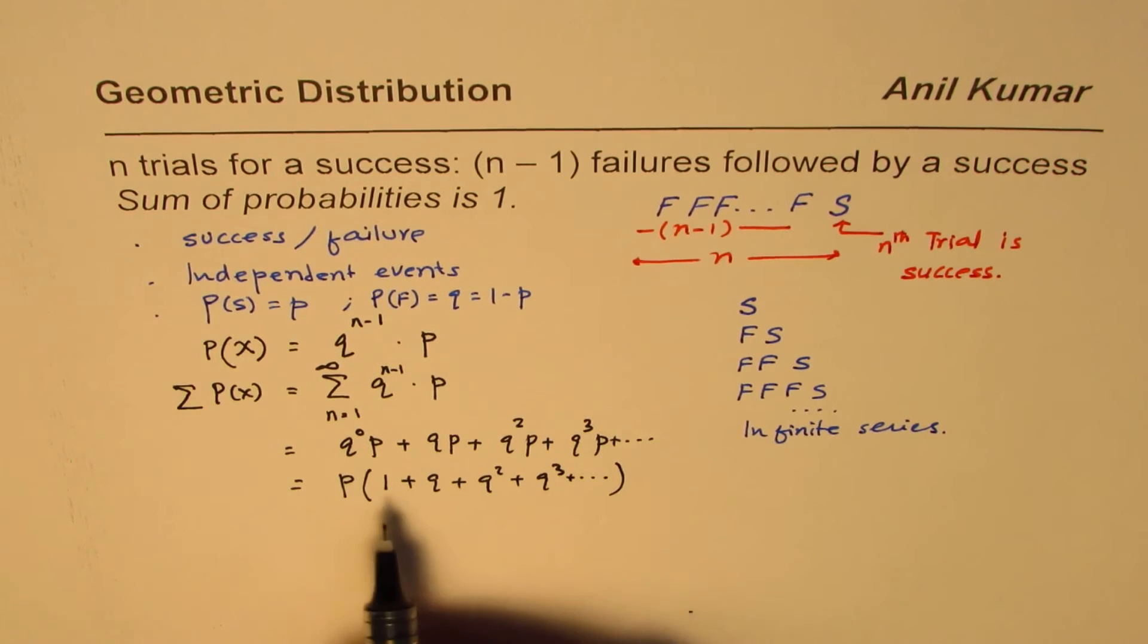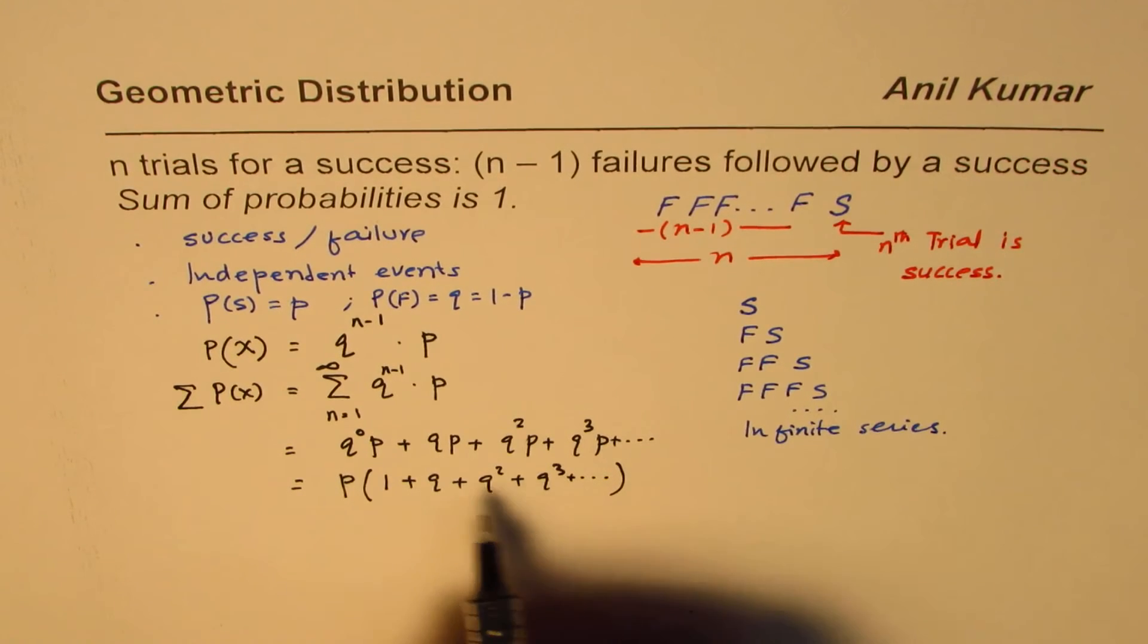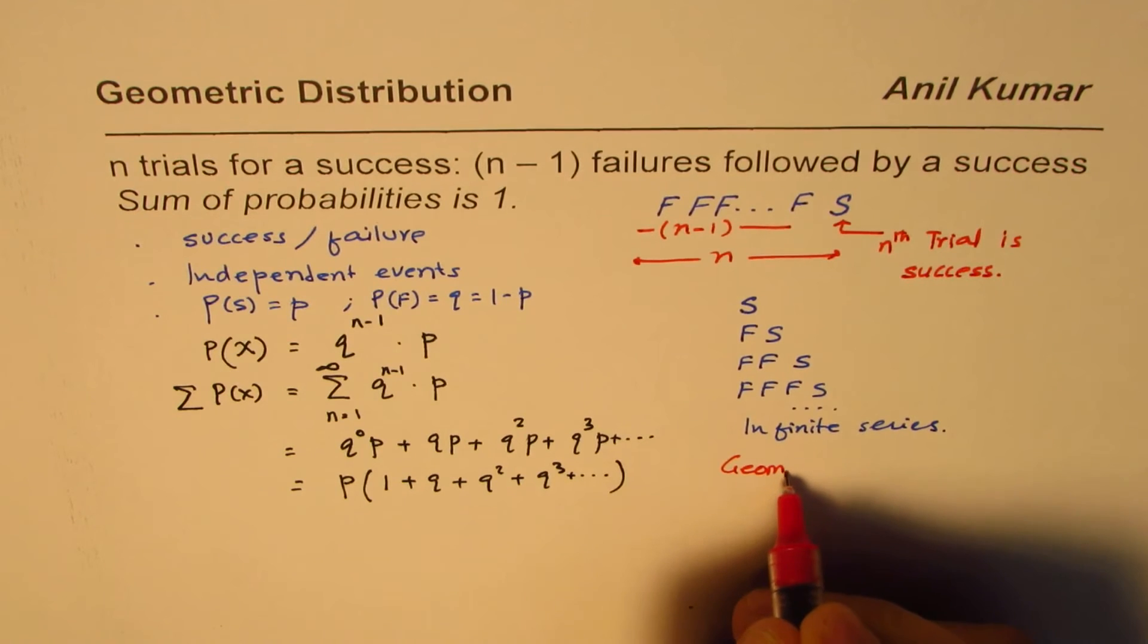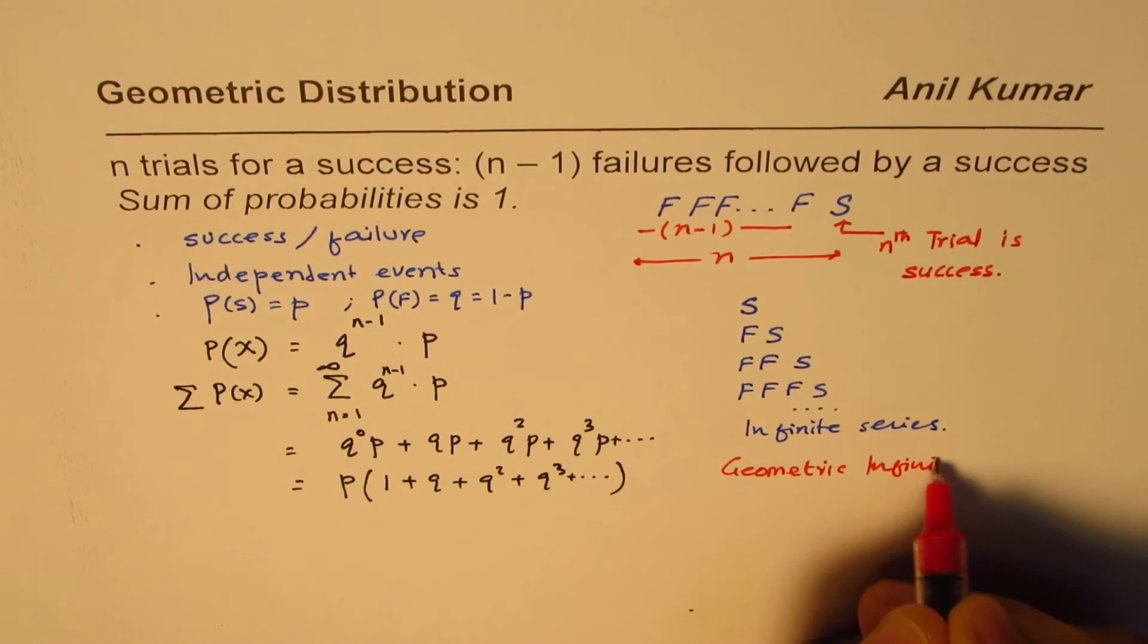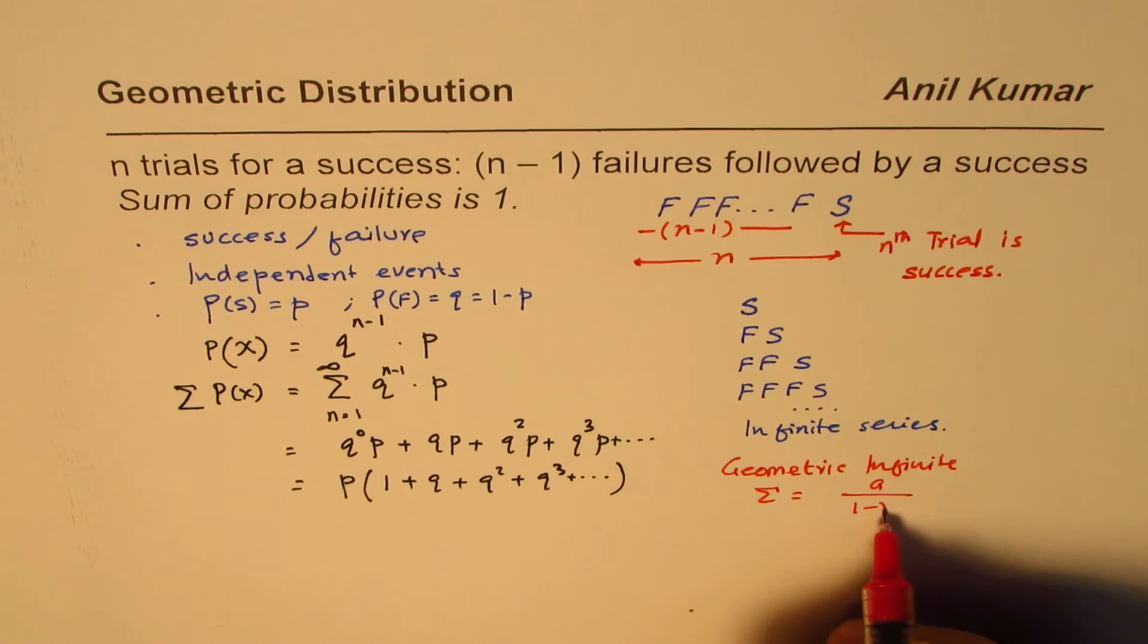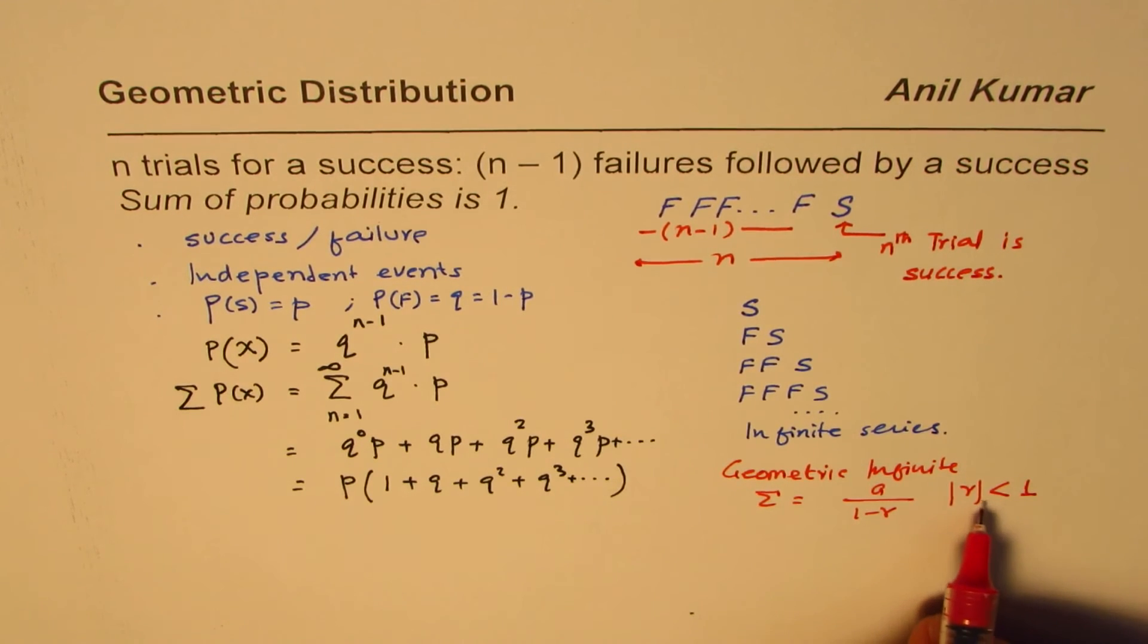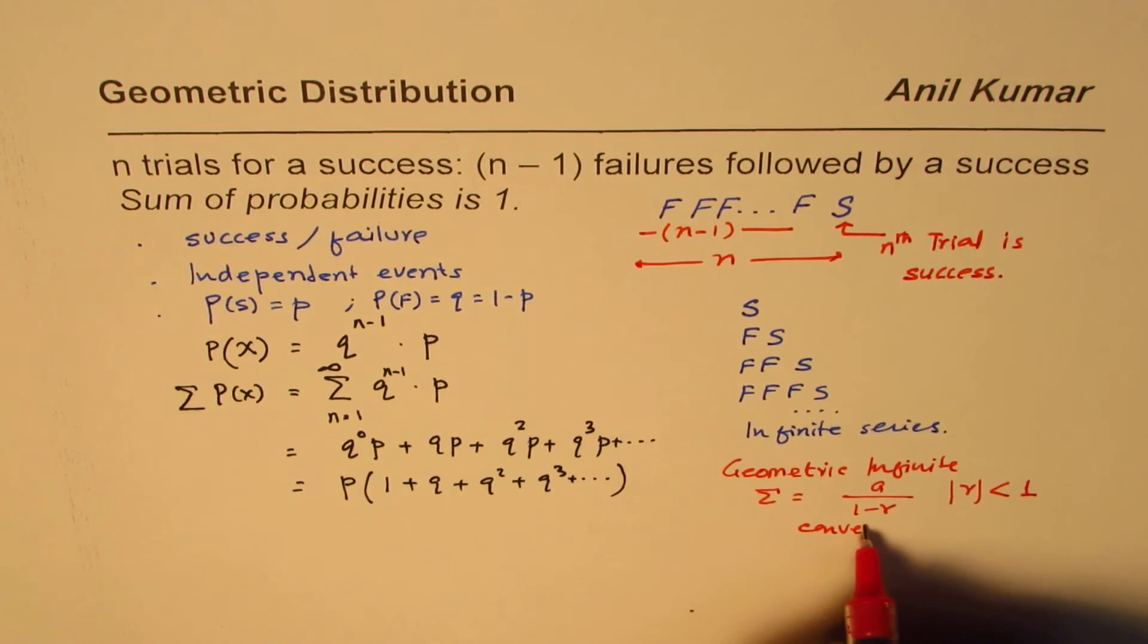Now, within the brackets, you find that series 1 plus q, plus q square, plus q cube, and so on. This is a geometric series. This is a geometric infinite series. Whose sum is equal to a over 1 minus r, where r is a constant ratio, and r should be always less than 1. r should always be less than 1. Only then this series converges. Otherwise, it will not converge.